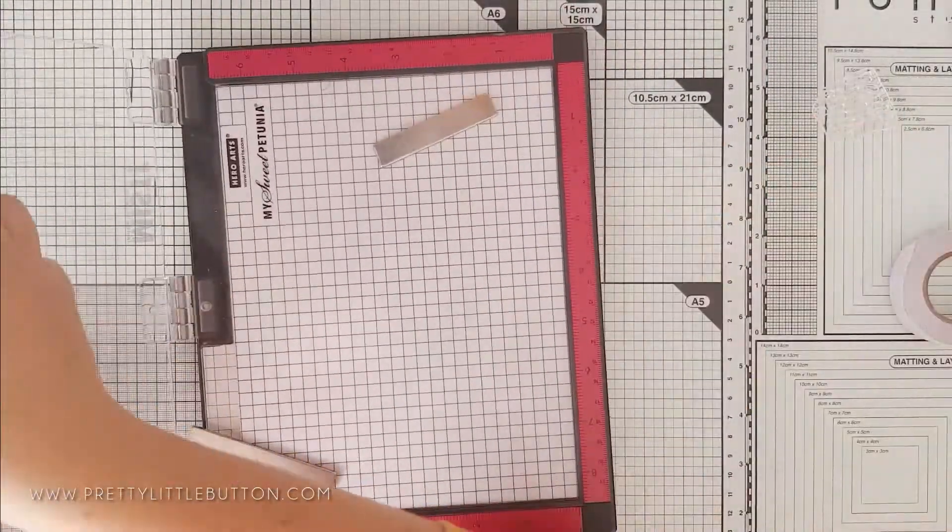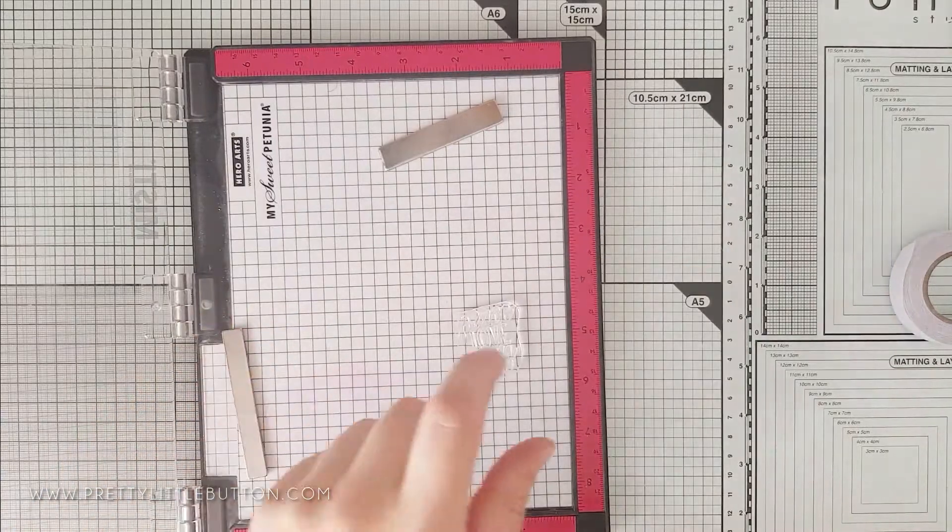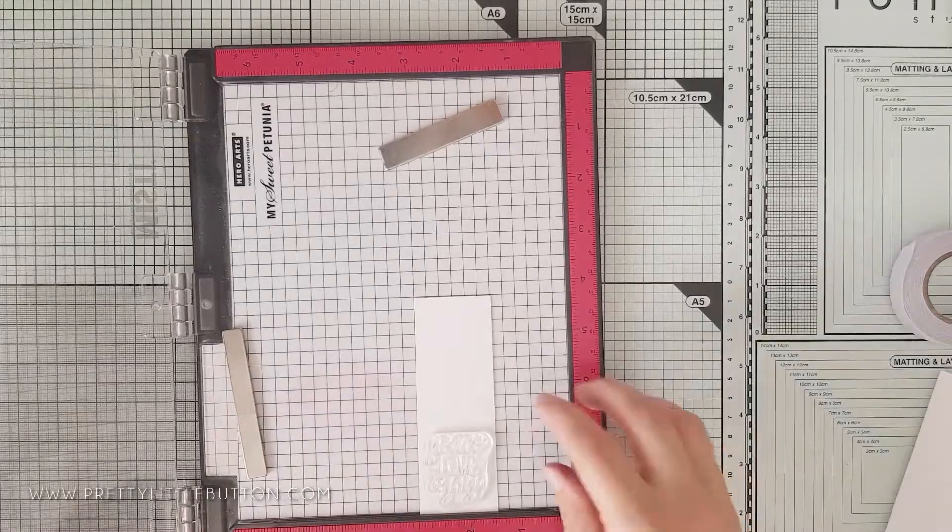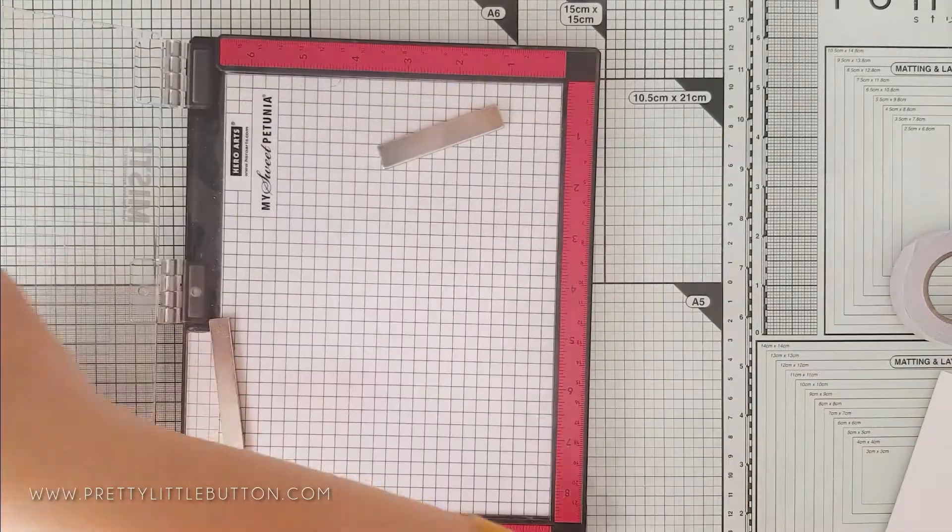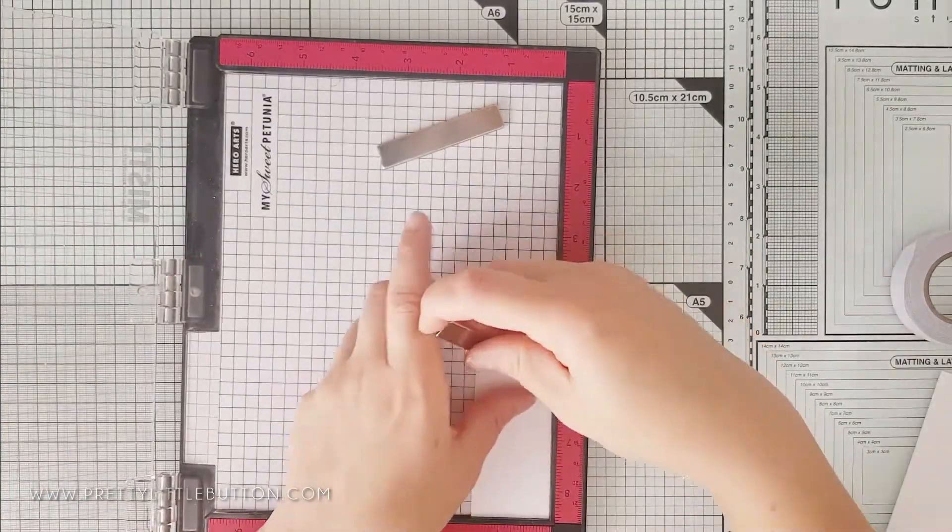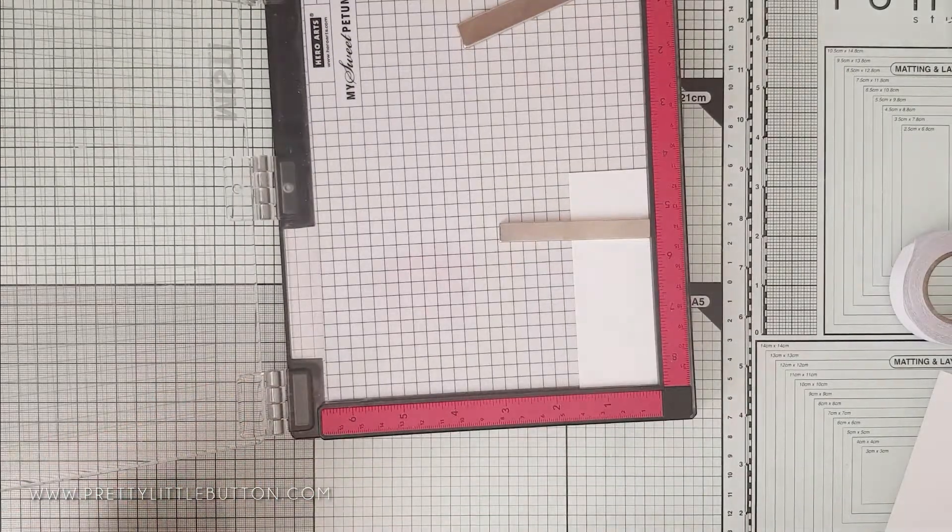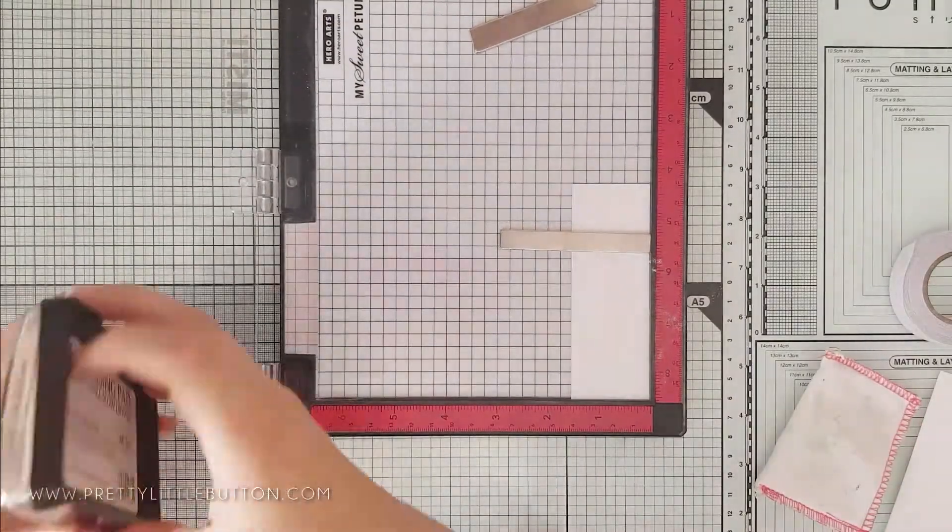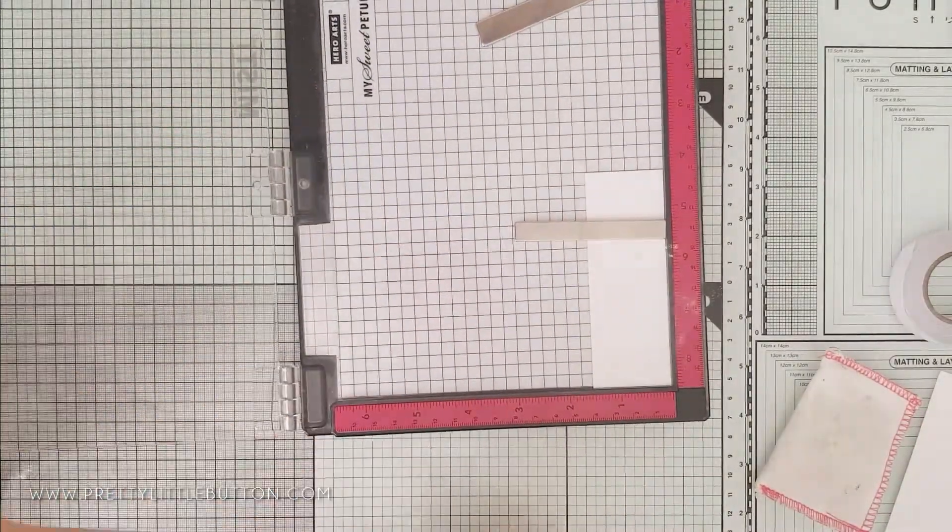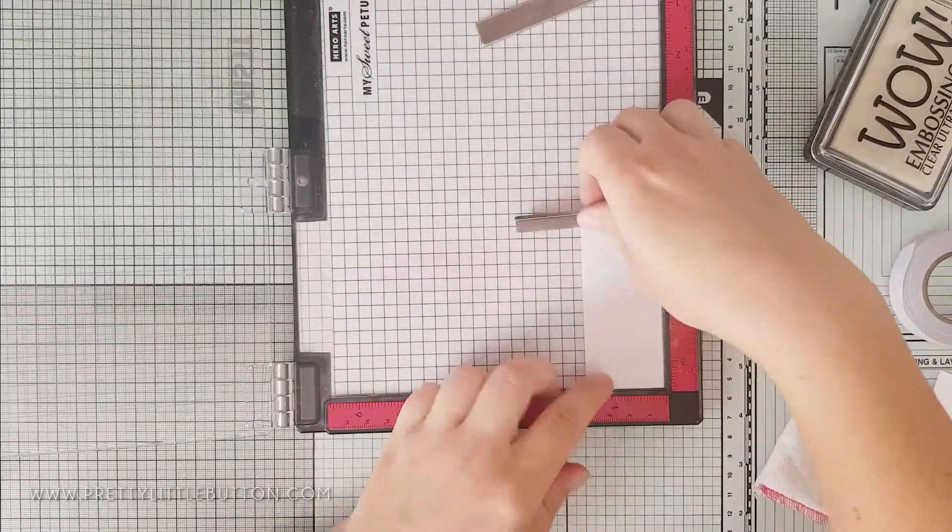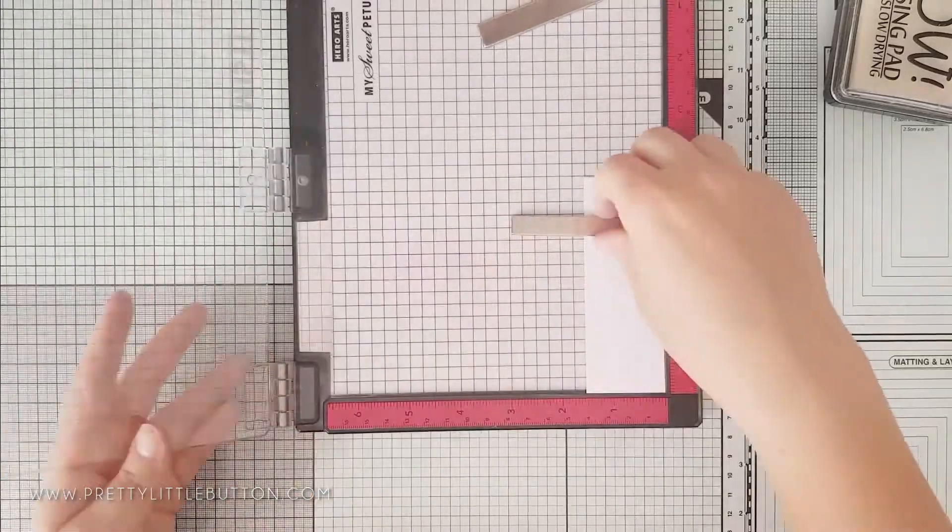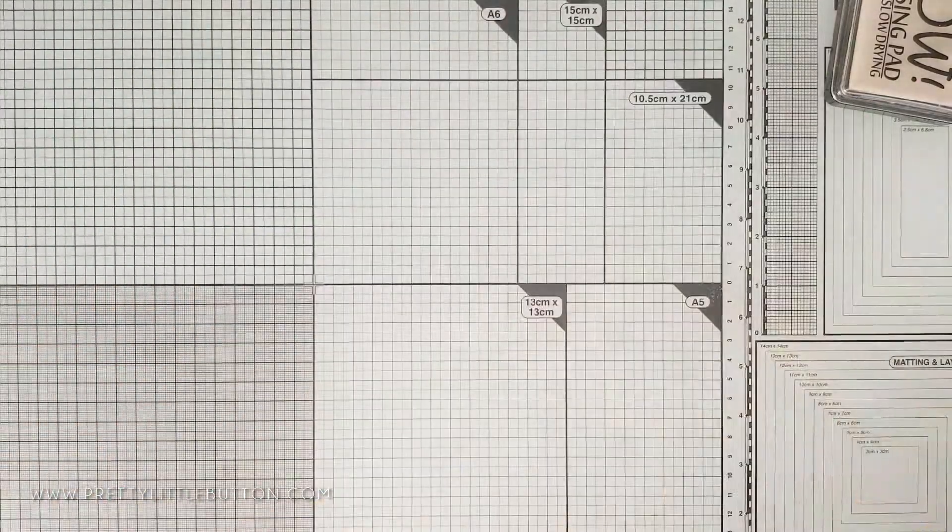Before I add the stamped images to the card, I want to create the sentiment. I have created a thin white card strip that I'm going to hang from the top of my card base. I'm going to heat emboss my sentiment onto this. From the stamp set, I'm using the Peace, Love and Joy stamp sentiment. I'm then going to stamp this in my Wow Clear Ultra Slow Drying Embossing Ink and cover this with Wow Metallic Gold Rich Embossing Powder.